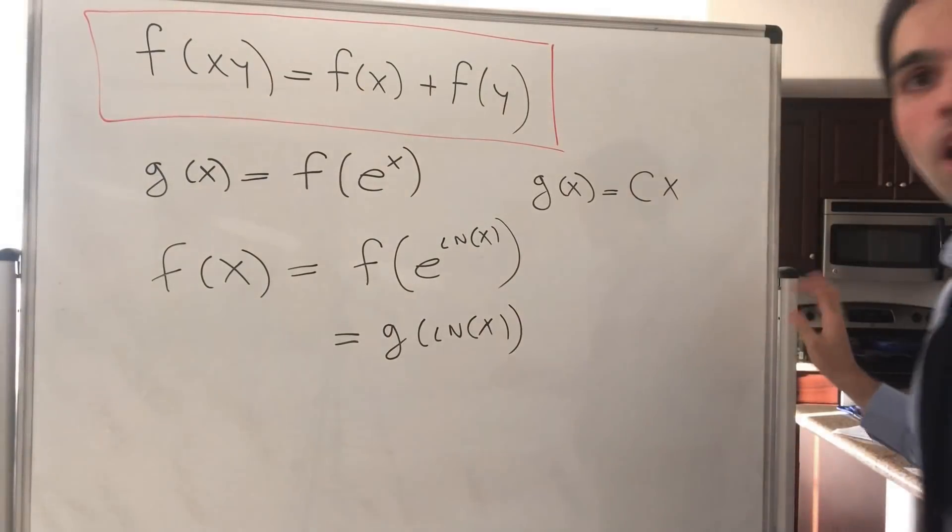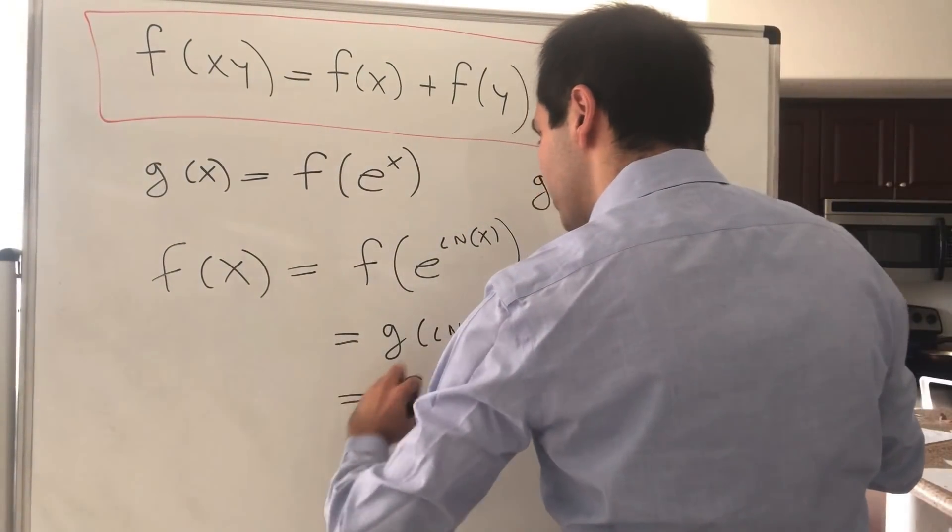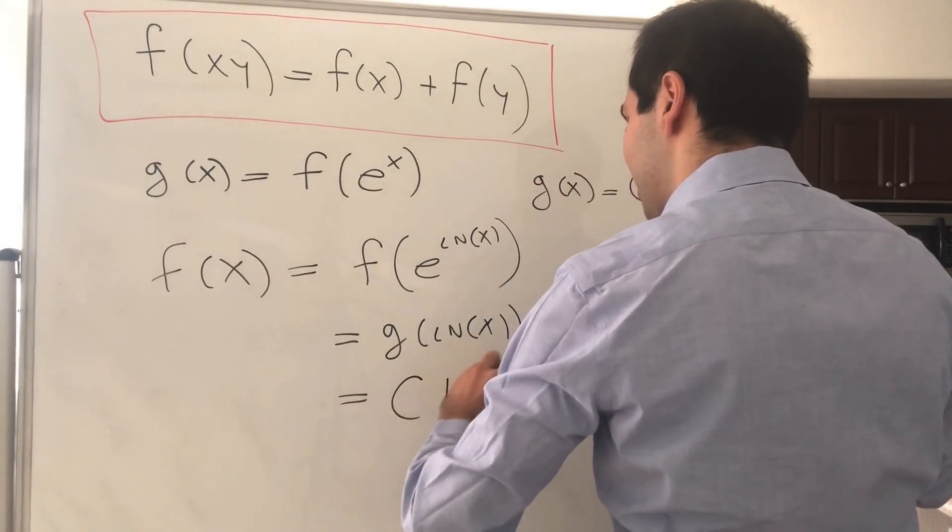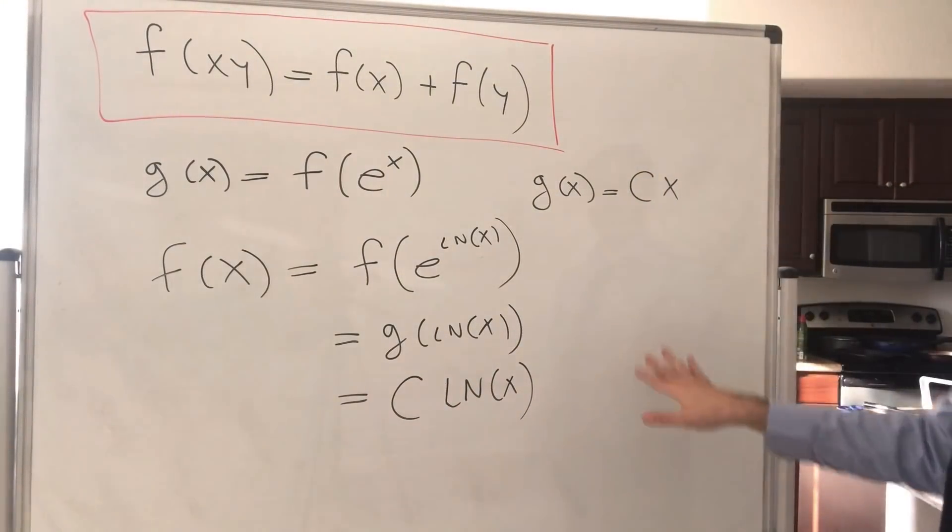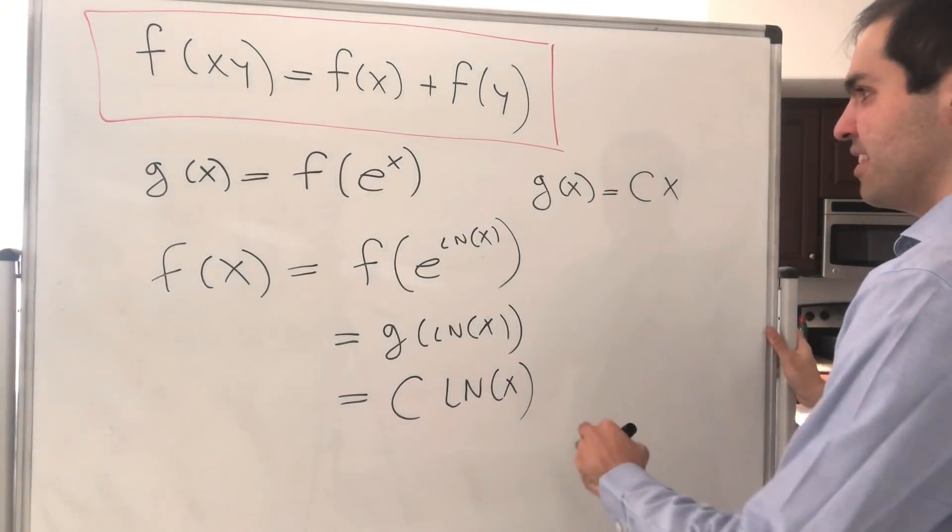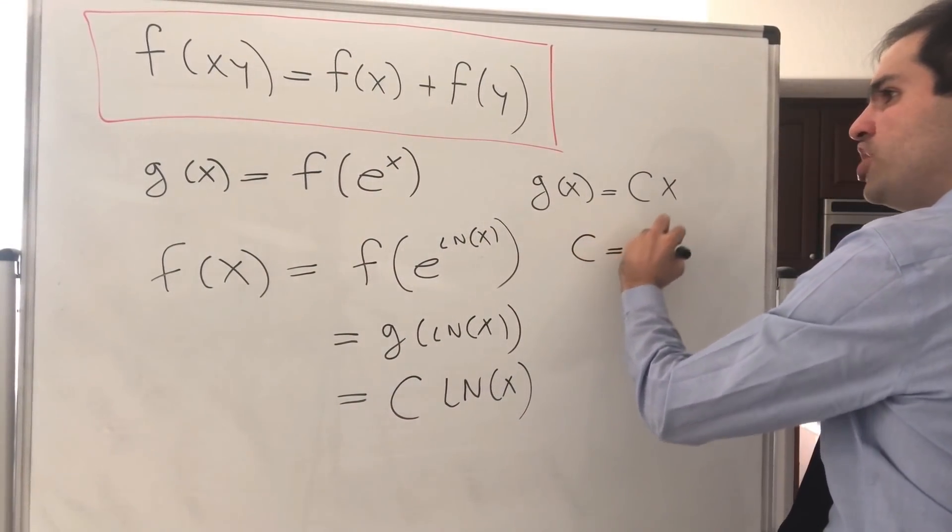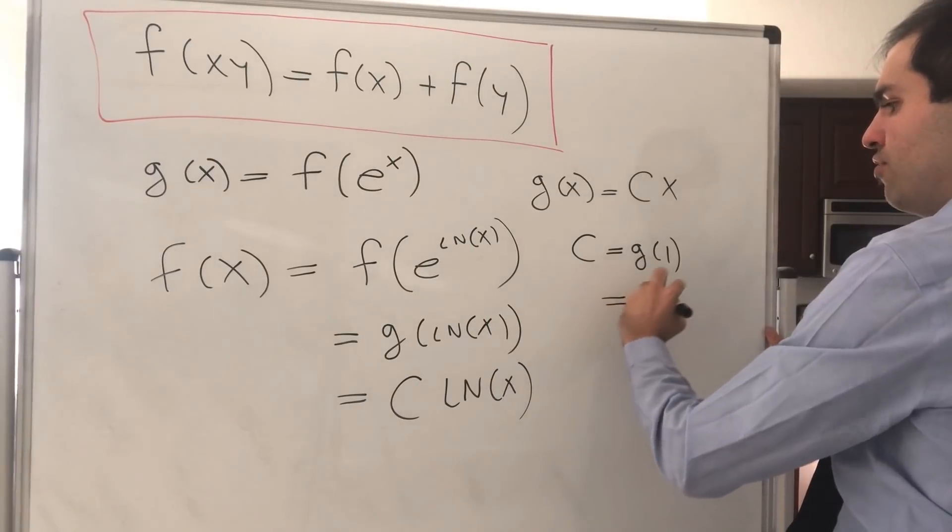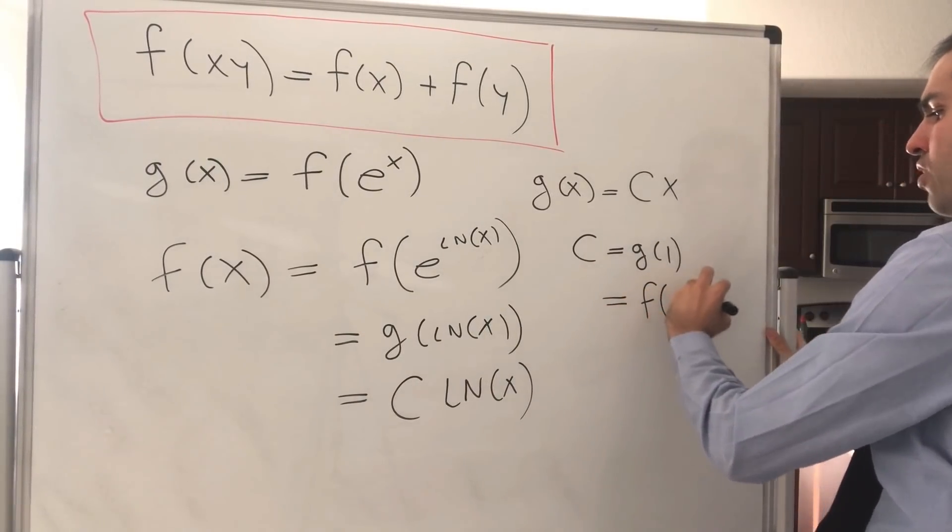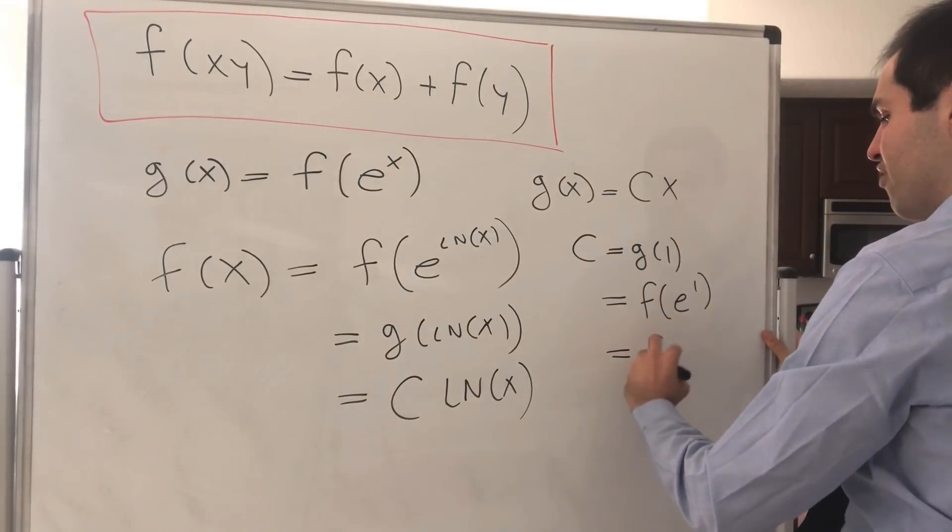But g of x is a constant times x. So this just becomes constant times ln of x. And last but not least, how do you find this constant? Well, the constant c was given by g of 1, but g of 1 is just f of e to the 1, which is just f of e.